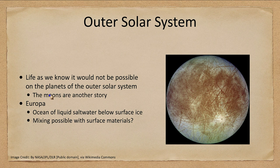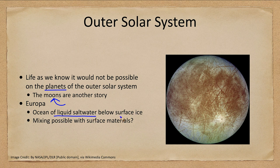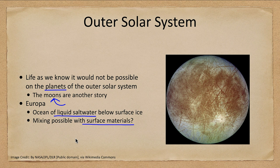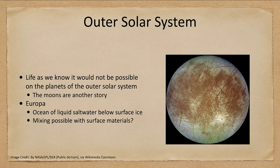How about the outer solar system? The planets we can rule out — no life as we know it could exist on them. The moons are a possibility. Europa has an ocean of liquid salt water below its surface ice, so going many miles below the ice there would be water. Could life form not on the surface but below it? And could surface materials mixing with that ocean, flowing up through cracks, allow us to detect it? Exploring Europa for that purpose is one of the priorities for the outer solar system.